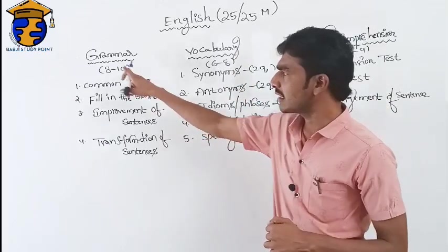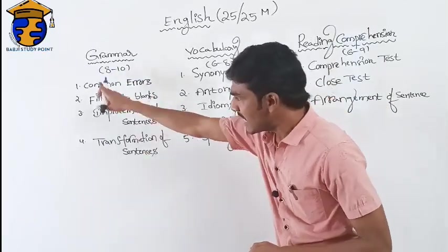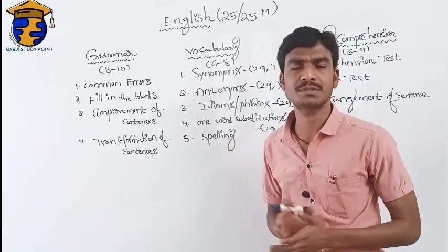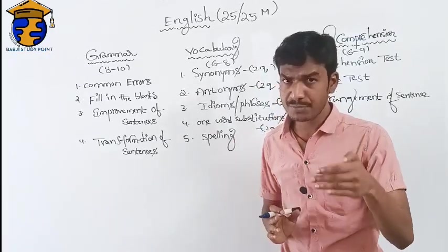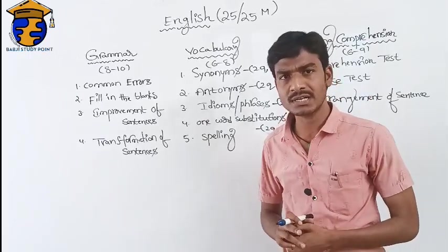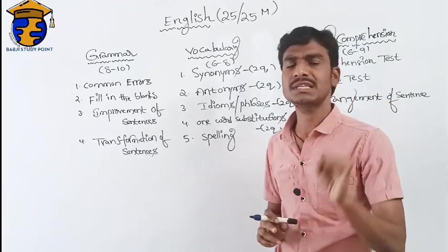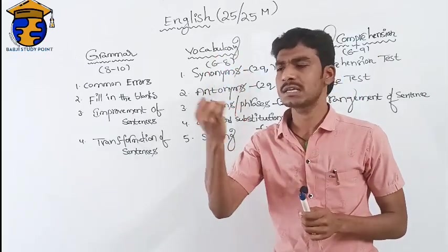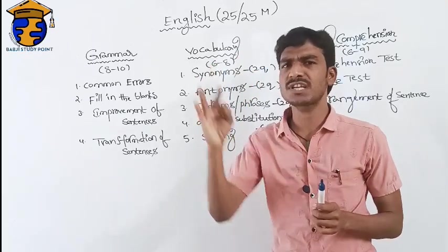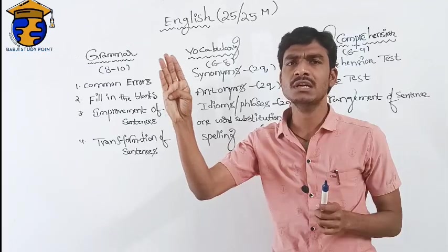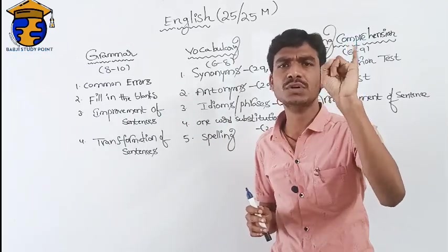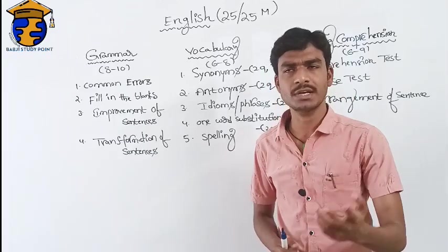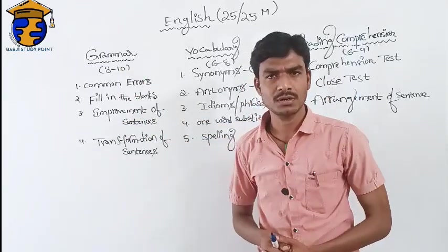You must learn these 12 chapters. Let me recap them: first, parts of speech; second, tense; third, articles; fourth, if clause; fifth, clauses; sixth, voice; seventh, directed speech; eighth, kinds of sentence; ninth, transfer of sentence; tenth, degrees of comparison; eleventh, question tag; and twelfth, subject-verb agreement. If you learn all of these, you will get a good score in English. These are your specific grammar topics. Now let us discuss the second section.